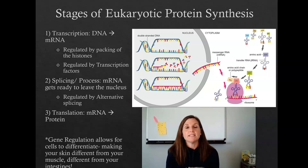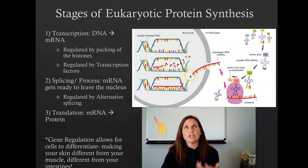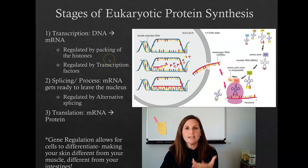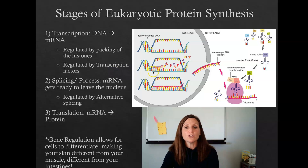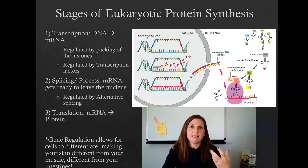At each stage of protein synthesis there is a chance for regulation. In transcription, DNA opens up and we make a piece of mRNA, but we have regulators — just because you have a gene doesn't mean you transcribe it. How tightly coiled the DNA is, whether it's loosely opened, and whether transcription factors are present all control how much gene product is made. Before the mRNA leaves the nucleus, it needs to be protected and spliced, and we can control expression through alternative splicing.